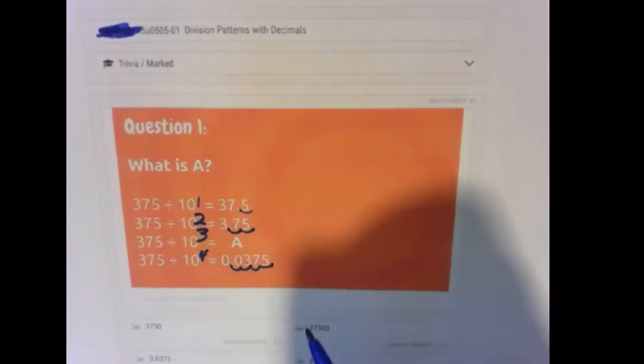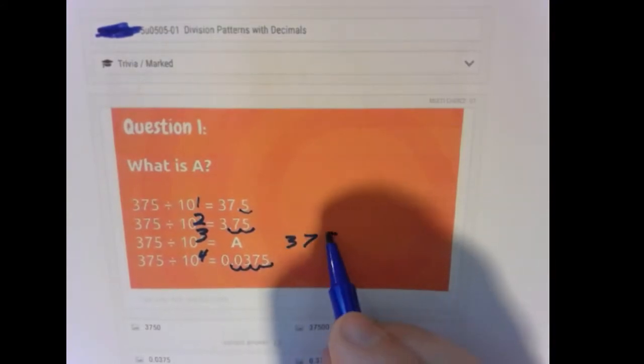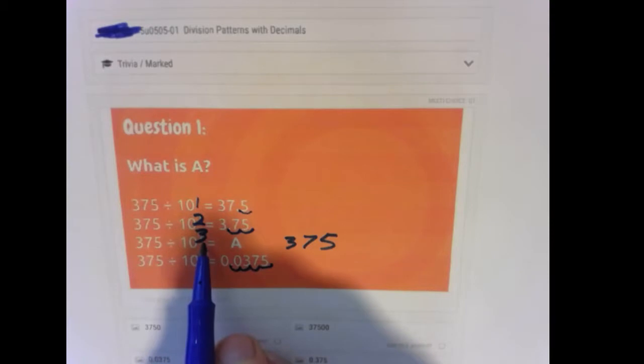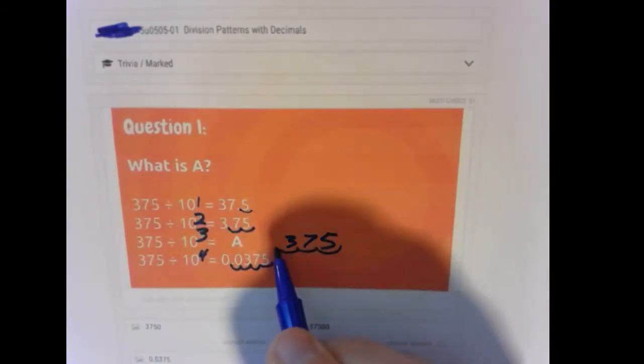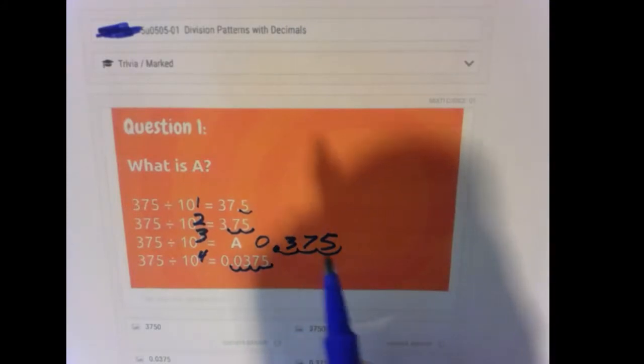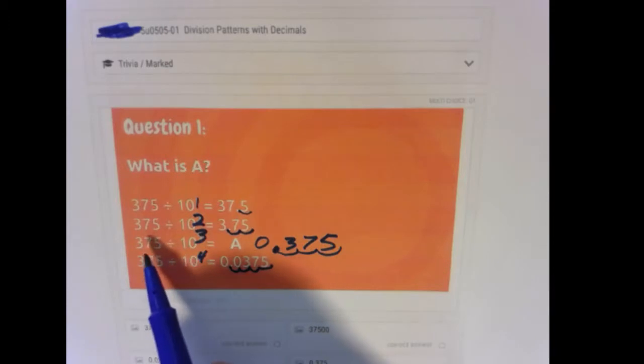So what do you think? Let's complete the pattern. What's going to happen if we start with 375, and we're going to move it three spots? 1, 2, 3. So what we're looking for, 375 divided by 10 to the third power, in other words, 375 divided by 1,000, is going to be 0.375.